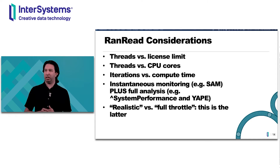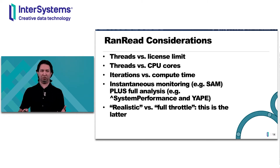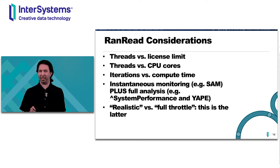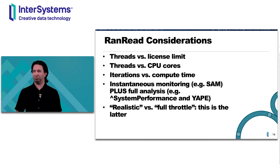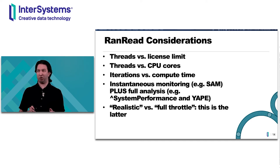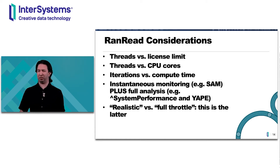Some considerations for running ranread: each thread takes up a license. So if your key involves 100 licenses and you run 50 threads, you're fine — but don't go over about 95, because if you hit your license limit it'll hang and you won't be able to recover easily. Also, each thread will try to take up as much CPU as it can on one core, so it won't saturate one thread per core but it'll get close. The iterations are not compute time — they take however long they take running flat out, so you'll need some experimentation.